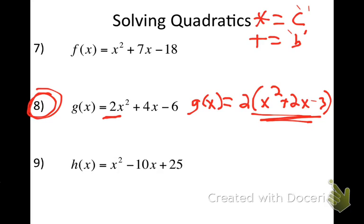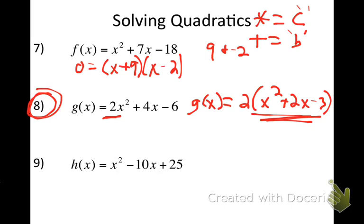Number 7: what two numbers multiply to get negative 18 and add to get 7? That's 9 and negative 2. I factor it: zero equals (x+9)(x-2). Setting each equal to zero, my answers are x equals negative 9 and x equals 2.